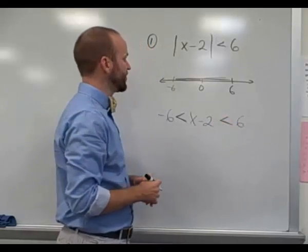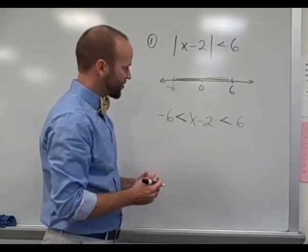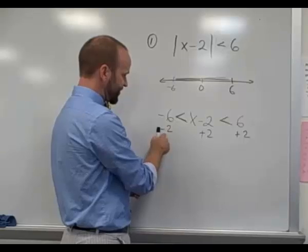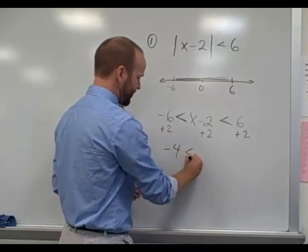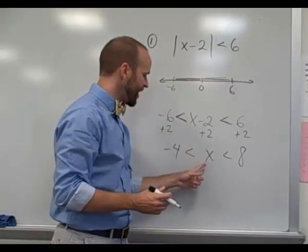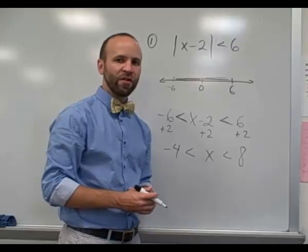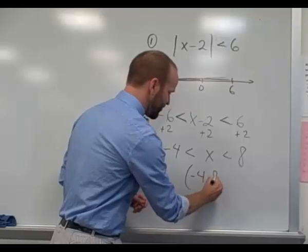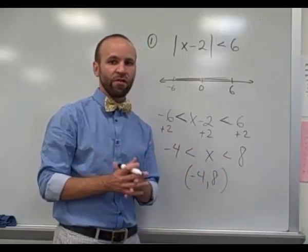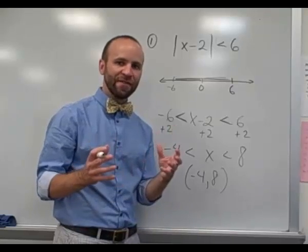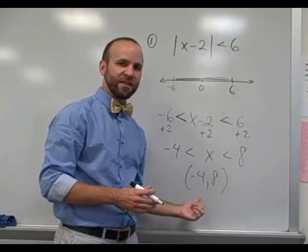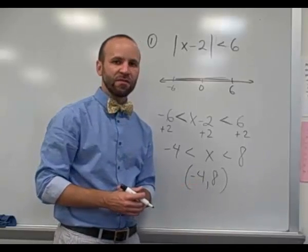We can solve a two-sided inequality to find the solution. Adding 2 to all three portions: negative 6 plus 2 is negative 4, x minus 2 plus 2 is just x, and 6 plus 2 is 8. So for this statement to be satisfied, x needs to be between negative 4 and 8. My interval is all numbers between negative 4 and 8. This is not an equation, so there are infinitely many possibilities — as long as x is anywhere between negative 4 and 8, this statement is true.